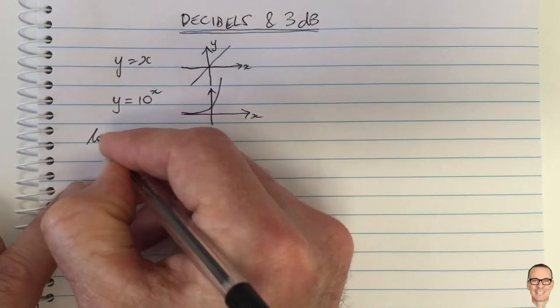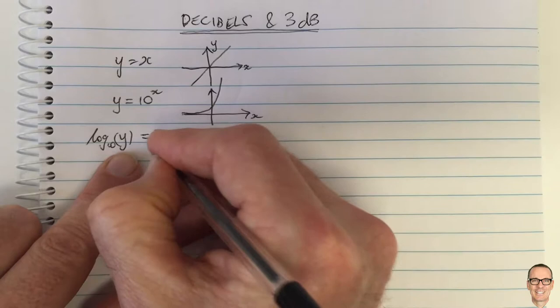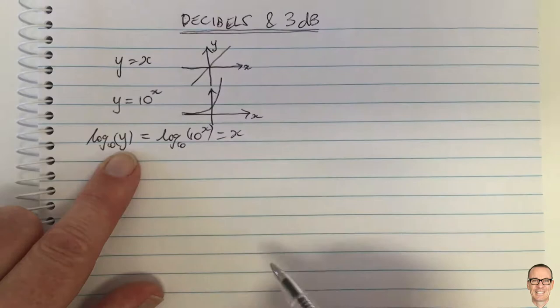So often people will plot on the vertical, they'll plot log to the base 10 of Y, because that equals log to the base 10, 10 to the X, that equals X.